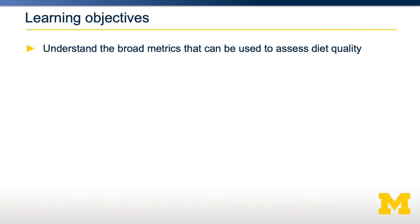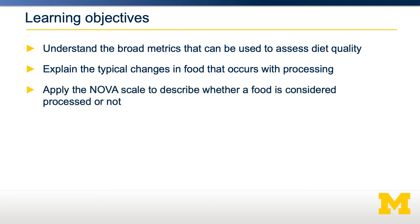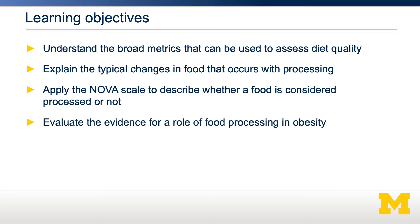There are a lot of different ways we could broadly assess a diet's quality. In this video, we're going to talk about some of the ways by which dietary quality can be assessed, and we're going to focus in on food processing as one matrix to quantify the quality of a particular diet. We'll also talk about why we process foods, the typical changes that occur, use the NOVA scale to describe whether a food is considered processed, and evaluate evidence about whether food processing may play a role in obesity.